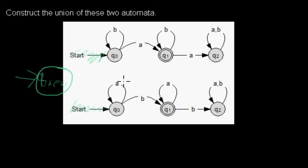So we create those new initial states. And from those initial states we add transitions to every one of the previous initial states with an epsilon.